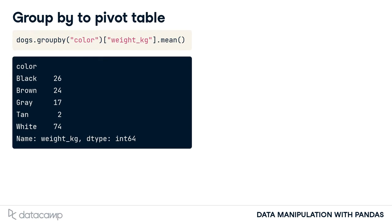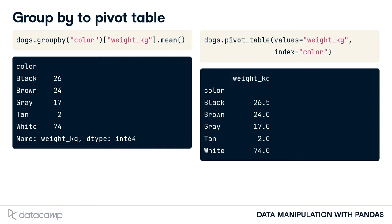In the last lesson, we grouped the dogs by color and calculated their mean weights. We can do the same thing using the pivot_table method. The values argument is the column that you want to summarize, and the index column is the column that you want to group by. By default, pivot_table takes the mean value for each group.